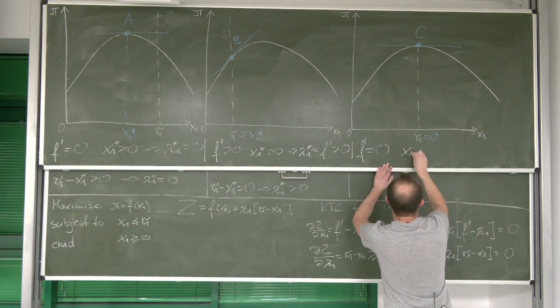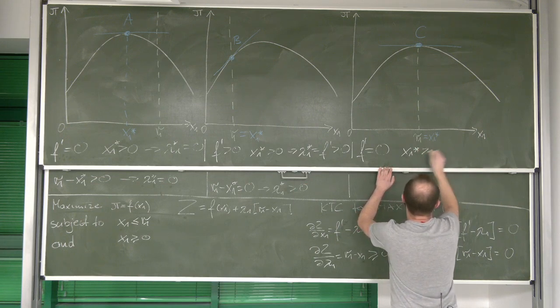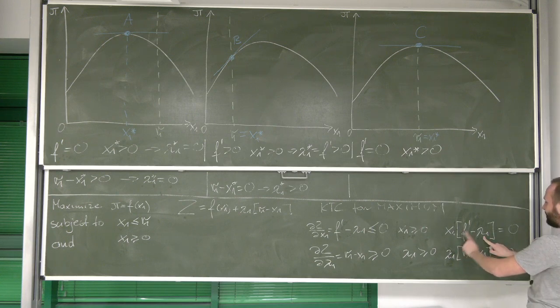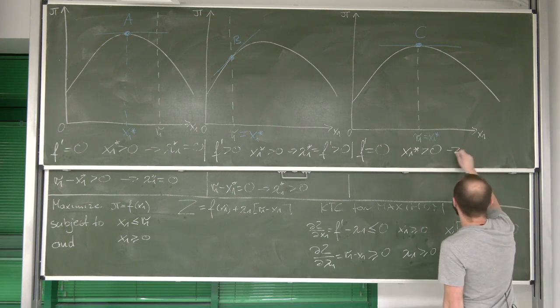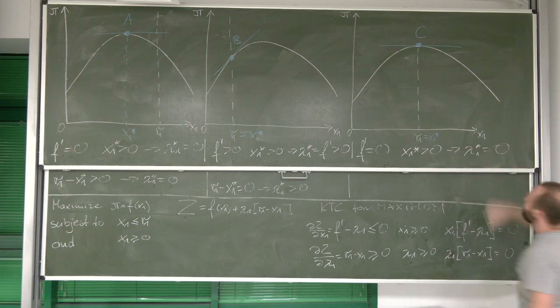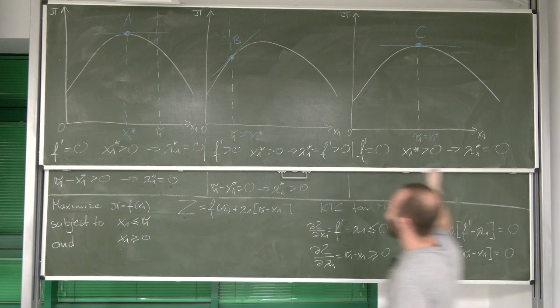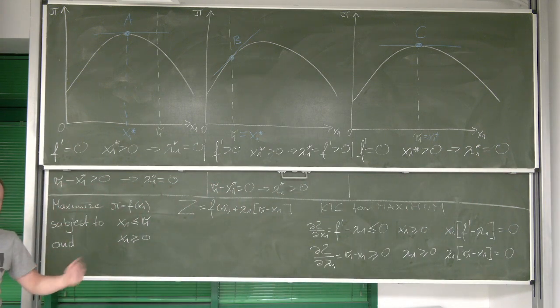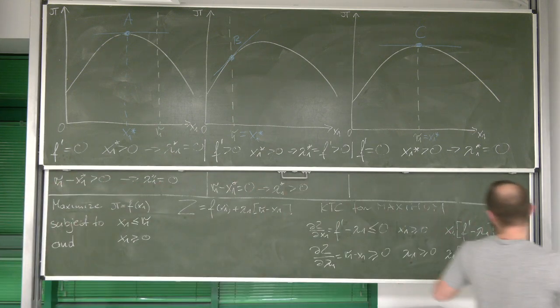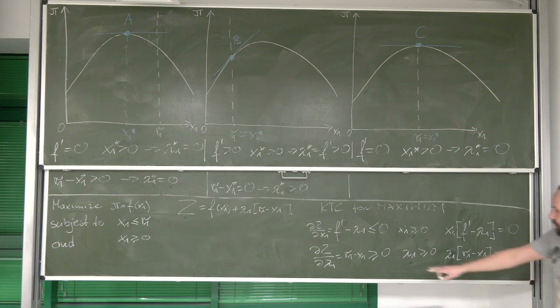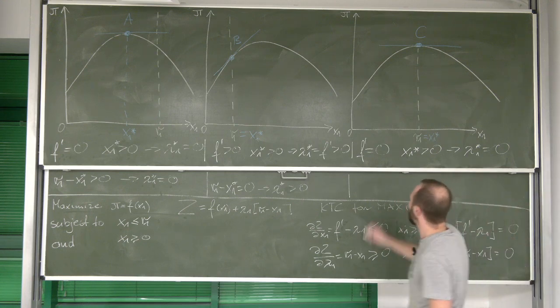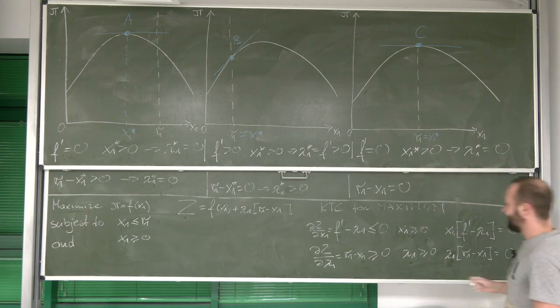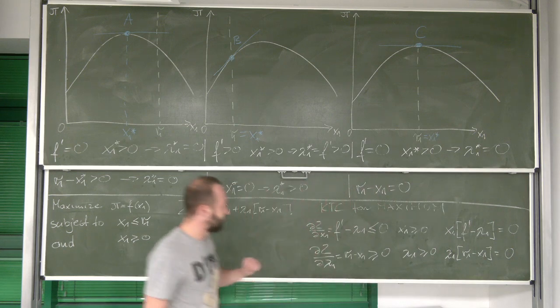And again, we end up in the same scenario. Lambda 1 must be equal to zero, which again says that we are at the constraint. So, constraint is binding. Moving on, we would get here, that r1 minus x1 is equal to zero. It is equal to zero.